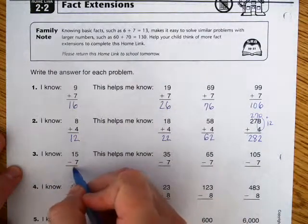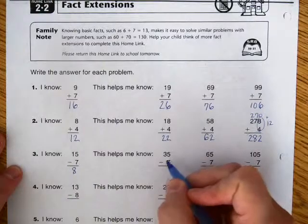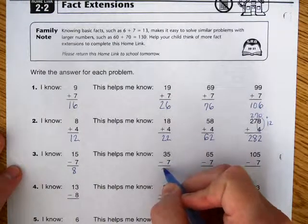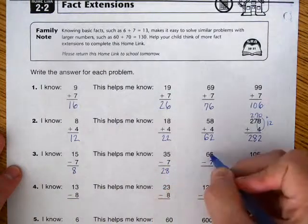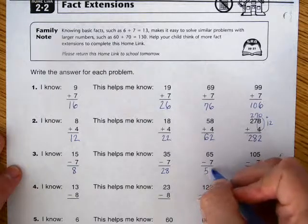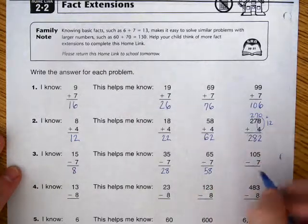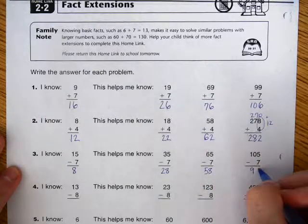I know that 15 minus 7 equals 8. This helps me know that 35 minus 7 equals 28, that 65 minus 7 equals 58, and that 105 minus 7 equals 98.